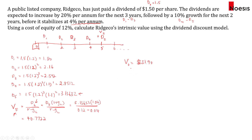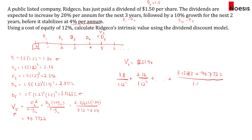If you prefer to do it manually without a calculator, you discount each year's cash flow by 12%: for example, 1.80 ÷ 1.12¹, then 2.16 ÷ 1.12², continuing through the final year where you take 3.13632 plus the intrinsic value 40.7722, all divided by 1.12⁵. This gives the same result but takes longer. Using the cash flow worksheet to calculate NPV is the faster approach.